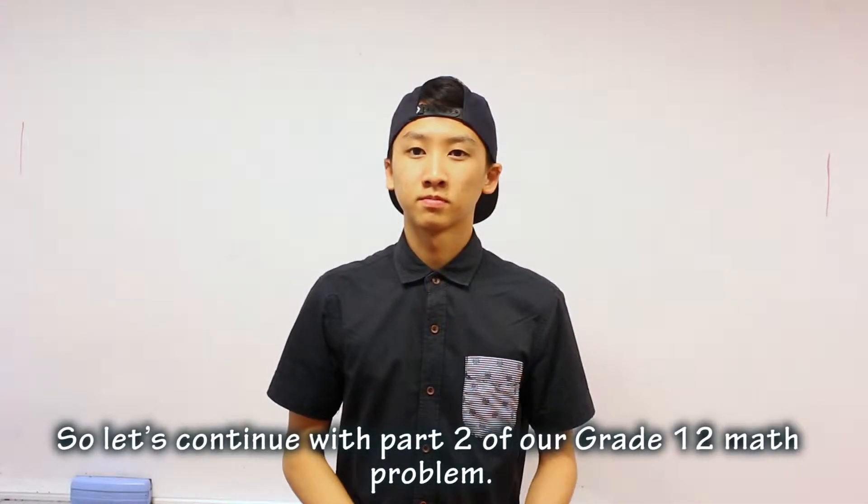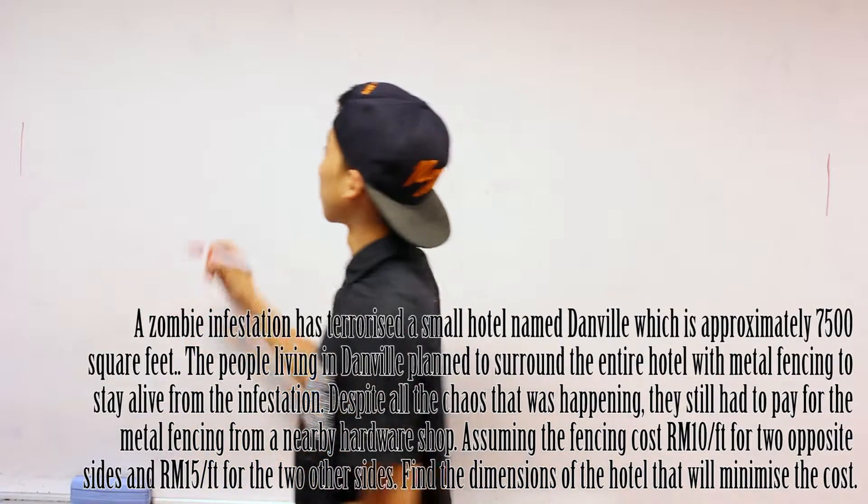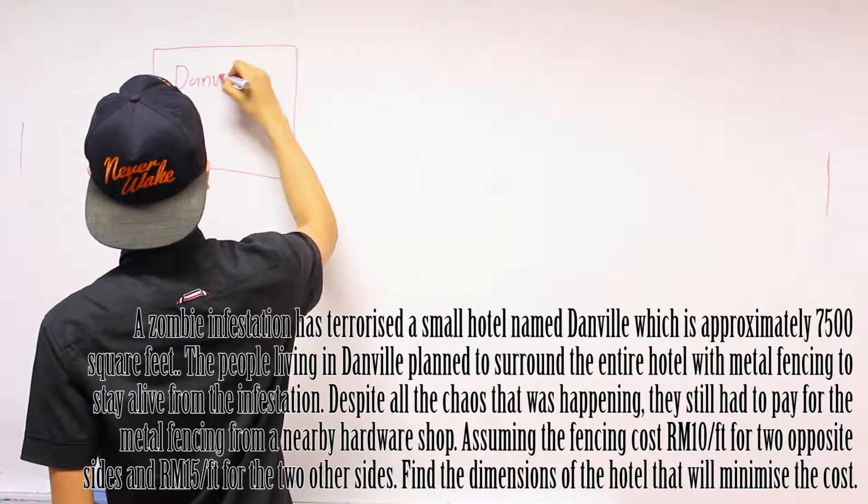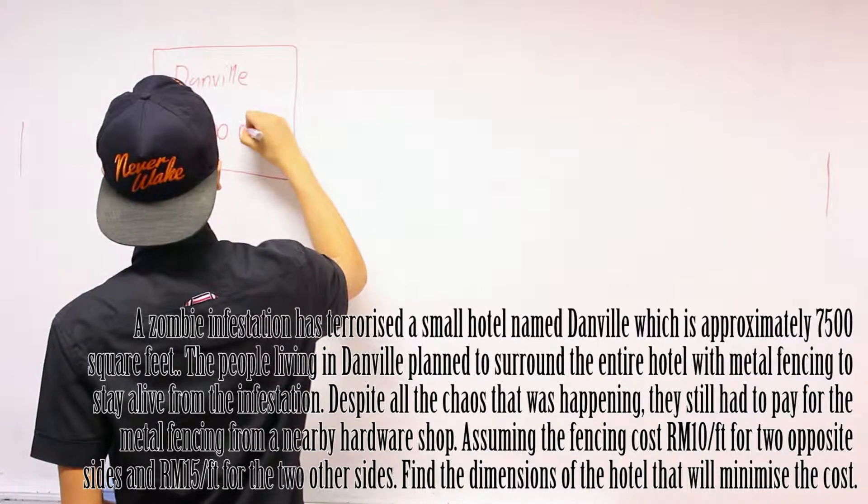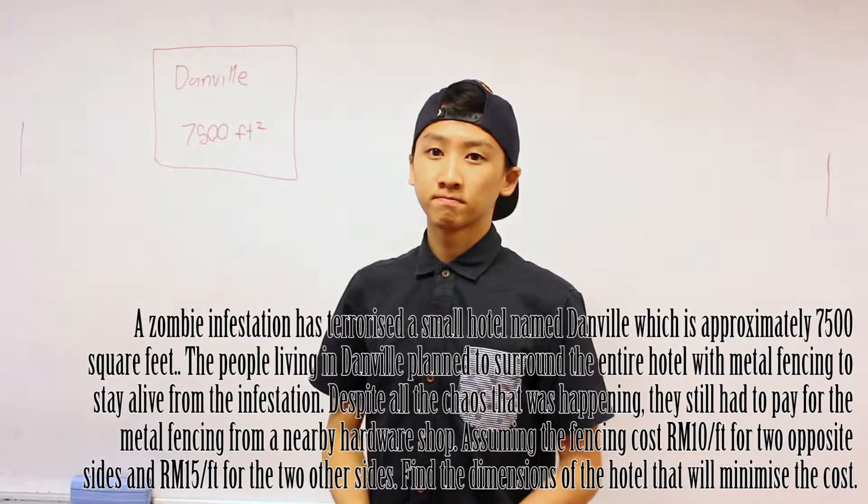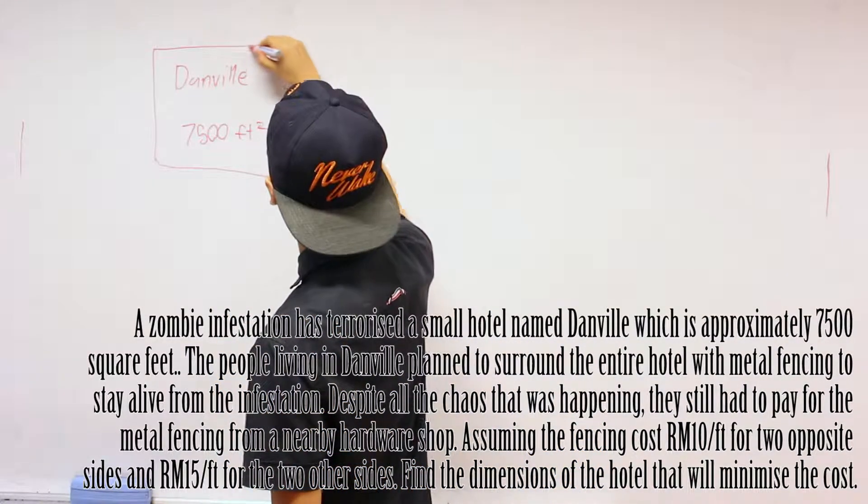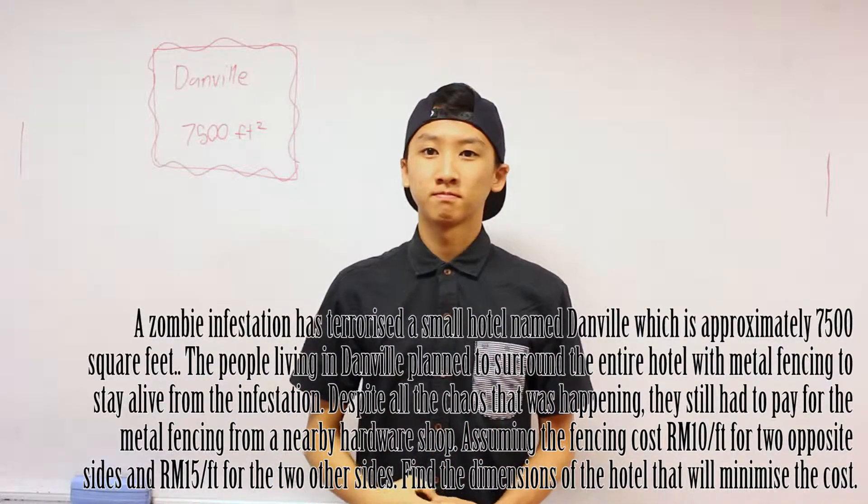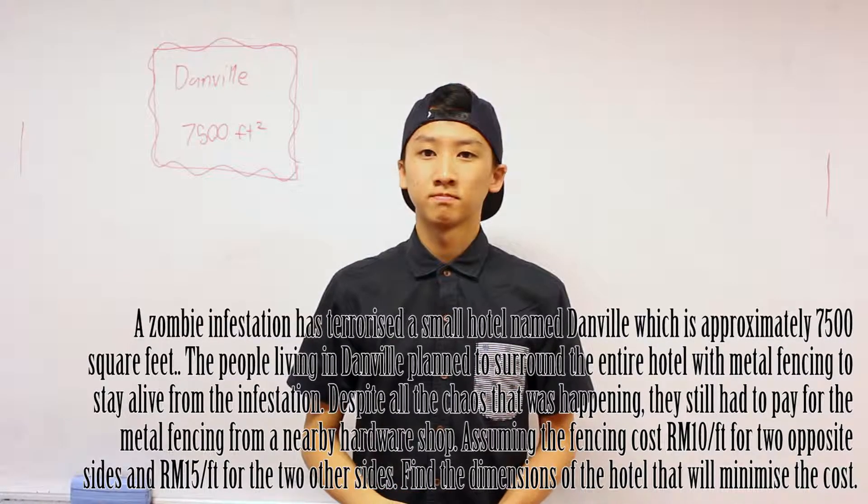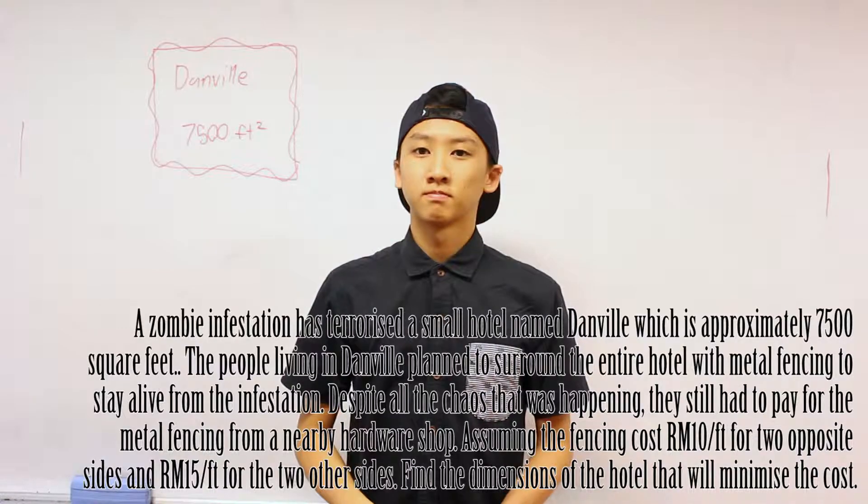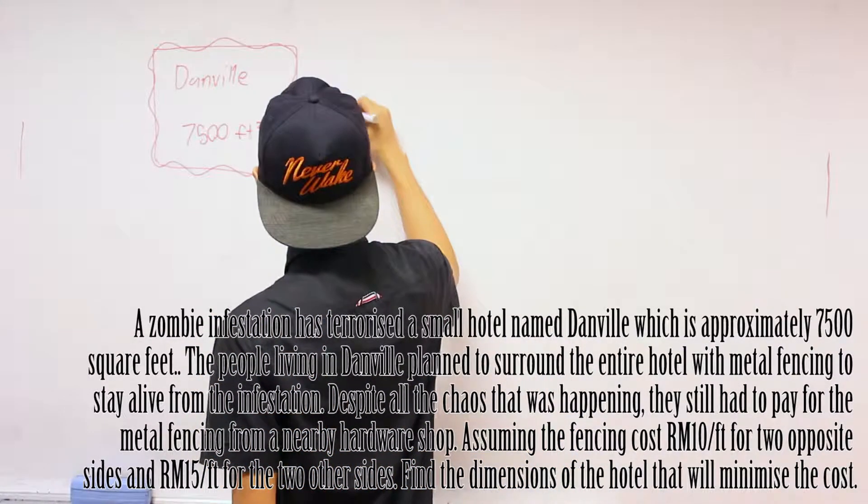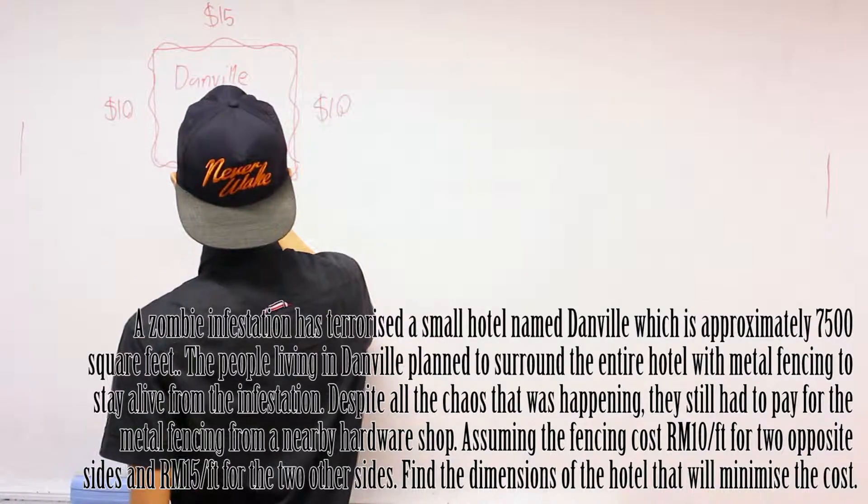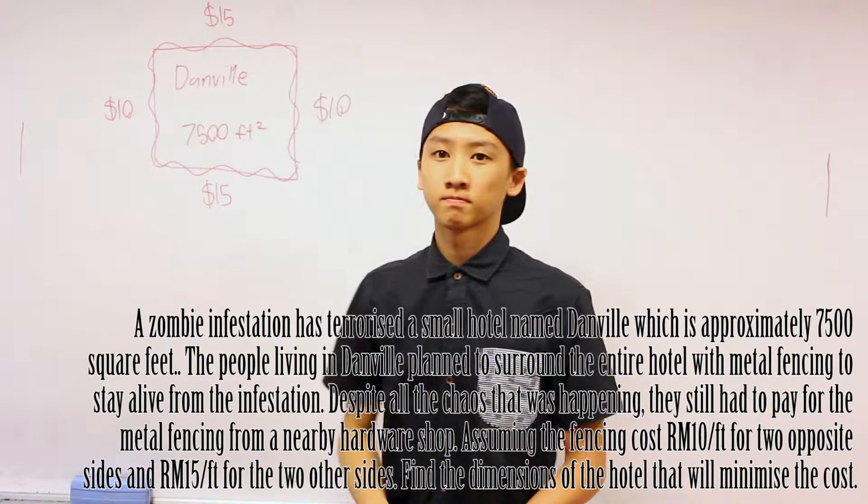So let's continue with part 2 of our grade 12 math problems. A zombie infestation has terrorized a small hotel named Danville, which is approximately 7,500 square feet. The people living in Danville planned to surround the entire hotel with metal fencing to stay alive from the infestation. Despite all the chaos, they still had to pay for the metal fencing from a nearby hardware store. Assuming the fencing costs $10 per feet for two opposite sides and $15 per feet for the two other sides, find the dimensions of the hotel that will minimize the cost.